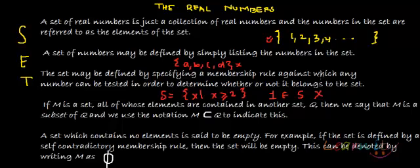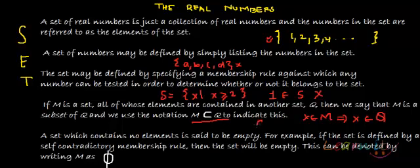Another property: if N is a set all of whose elements are also contained in another set Q, then x belonging to N means x also belongs to Q. This means N is a subset of Q. This is the symbol for subset, this sign is for equality, and this means a proper subset — it is not equal but smaller.